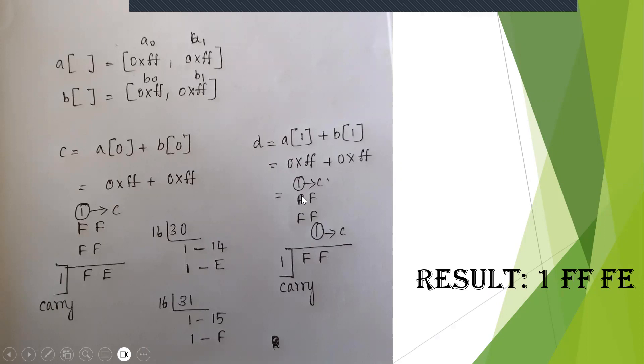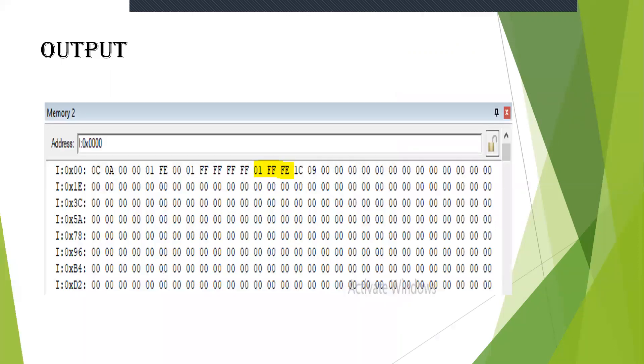So the result will be stored like FF in one place, FE in one place, and 1 as a carry. So this is your complete result of adding two 16-bit numbers. See here, this will be your output: 01 FF FE. This is the output that should be seen in the memory window.